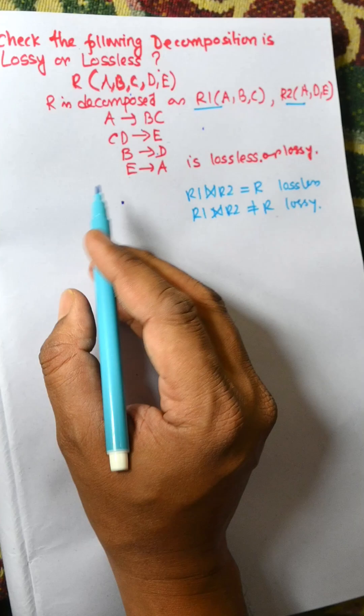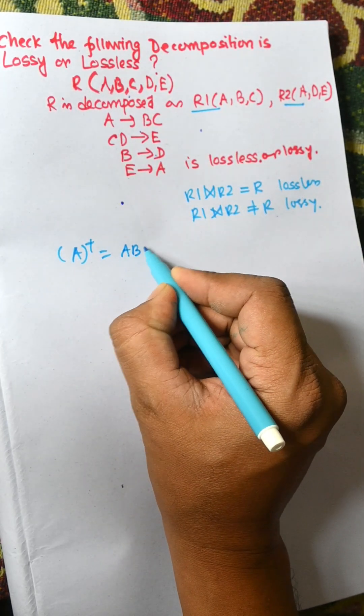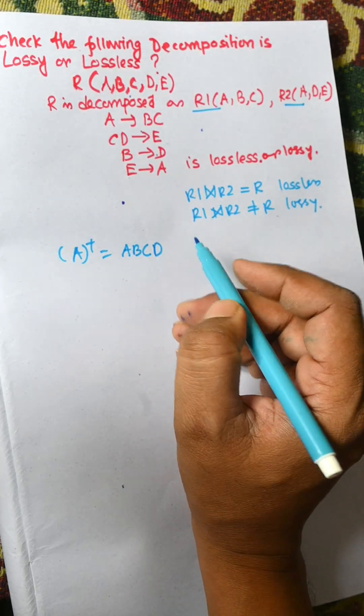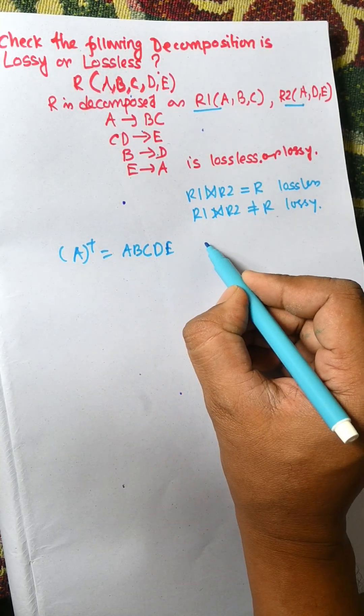Now we need to find the candidate key. A plus equal to A to B, C, from B to D and from C, D to E. Here we get R, so A is a candidate key.